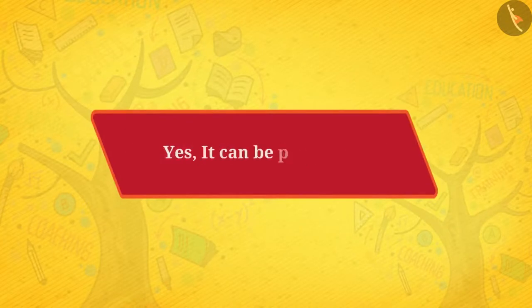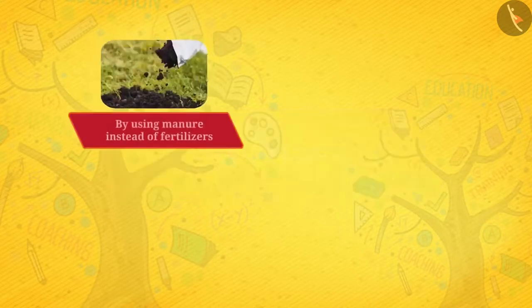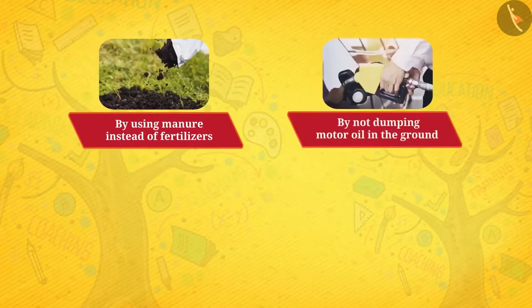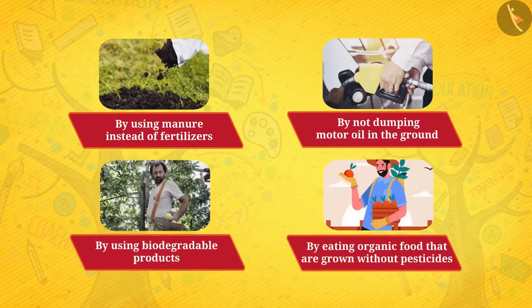Yes, it can be prevented. Let us see how. Soil pollution can be prevented by using manure instead of fertilizers, by not dumping motor oil in the ground, by using biodegradable products, and by eating organic food that are grown without pesticides.